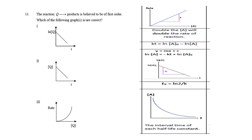Question eleven: for a first-order reaction, identify the correct graph. A plot of ln[A] versus time is a negative-slope linear graph — correct. Concentration versus time gives a curve, not a straight line. Rate vs. 1/concentration is not directly proportional for first order. The only correct option is the first one, so the answer is A.